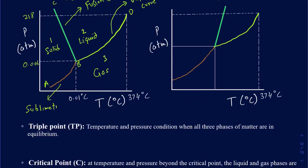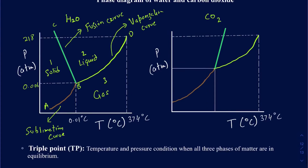You're going to see those three curves in carbon dioxide as well, with slight differences in temperature and pressure conditions. Wherever these three curves meet — at point B — that point is called the triple point. The triple point is the condition of temperature and pressure where all three phases of matter are in equilibrium. For water, you can have ice, liquid, and vapor all existing together at that condition.